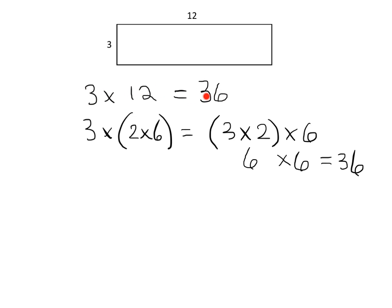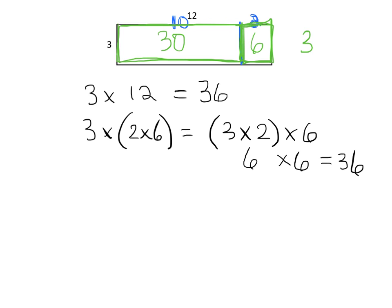This is not the only way we could figure out that the answer is 36. Another idea students could use is the distributive property — taking this 12 and turning it into 10 plus 2. That makes this big rectangle 3 times 10, which is 30, and this little rectangle 3 times 2, which is 6, giving us 36. But right now we're going to focus on expressions using multiplication only — not turning 3 times 12 into 3 times 10 plus 3 times 2.